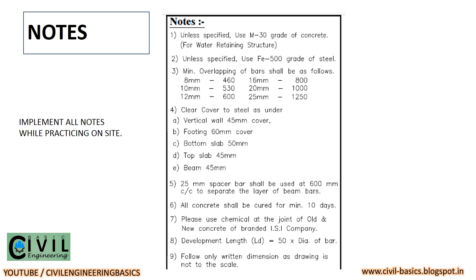Second: unless specified, use FE 500 grade of steel. Third: the note is about overlapping of bars of various diameters. As you can see, for 8 mm diameter the overlapping should be 460 mm, and for 20 mm diameter the overlapping should be 1,000 mm. Overlapping of reinforcement is very important. Fourth: the note is about covers to reinforcement. In the vertical wall a 45 mm cover is given, and in the bottom slab the cover is 50 mm. All other parts' covers and general notes are also given.